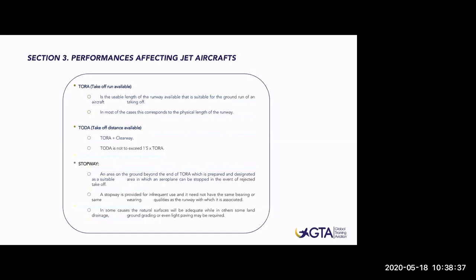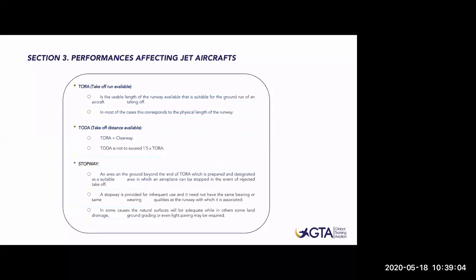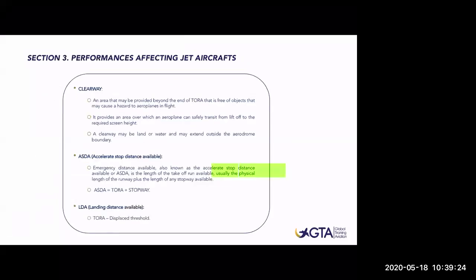ASDA — Accelerate Stop Distance Available — also known as emergency distance available, is the length of the takeoff run available plus the length of the stopway. So ASDA equals TORA plus stopway, which we may use in case of a rejected takeoff. LDA — Landing Distance Available — is the TORA displaced from the threshold. In this graphic, we can clearly see all these basic performance concepts: LDA, TORA, ASDA which is TORA plus stopway, and TODA which is TORA plus clearway.